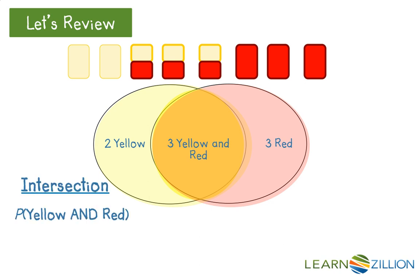Therefore, the probability of the intersection of yellow and red is 3 divided by 8, or 37.5%.